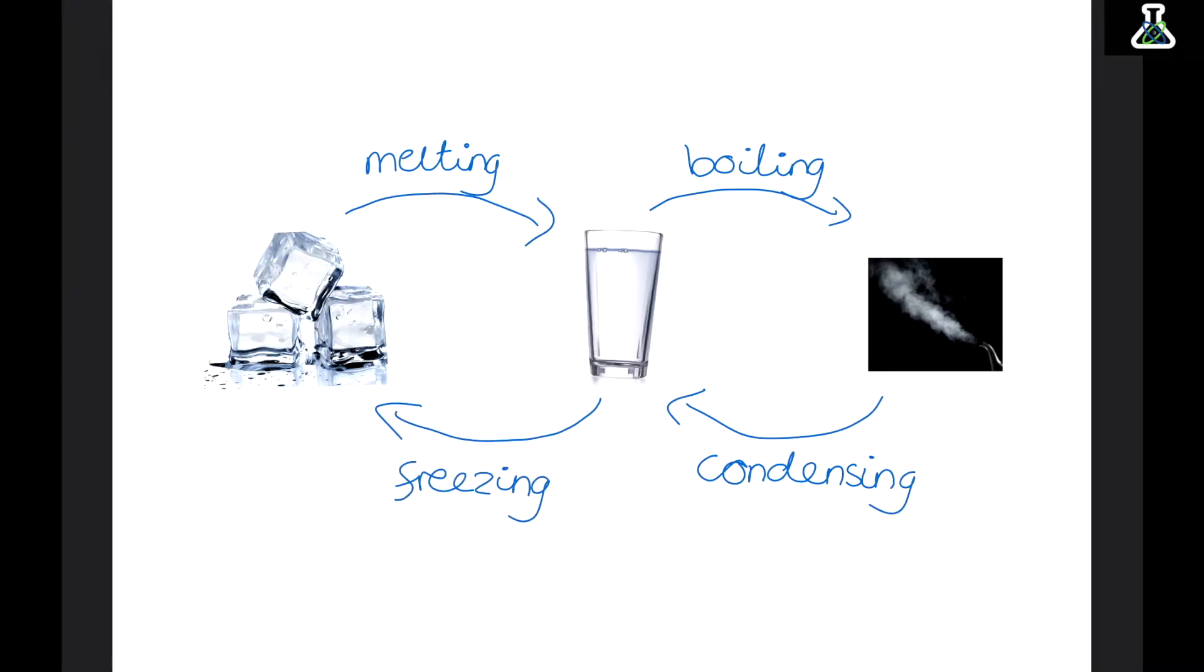Now in some special cases we can go right from a solid all the way up to a gas, skipping the liquid stage. And this is called sublimation. Then in a similar way we can go from a gas all the way to a solid skipping the liquid. And this is called deposition.